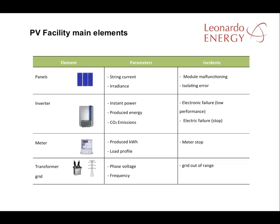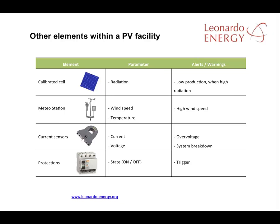The panels and transformers should also be monitored. On the panels you can monitor both the current and the irradiance. The current is quite easy to monitor with devices that are readily available in the market. You can detect solar panels that are producing lower electricity than they should using a calibrated cell to measure irradiance. The meteorological station will give you measures of wind speed and temperature. Temperature has a direct effect on the solar panels' production capacity.